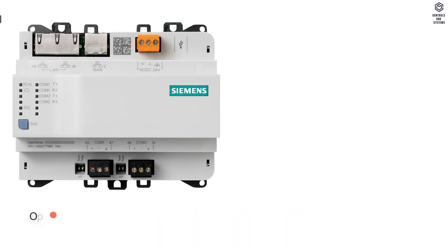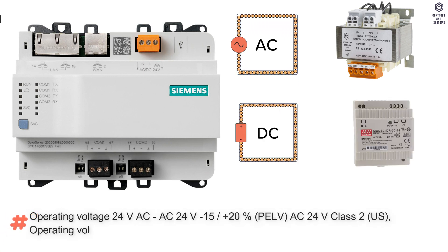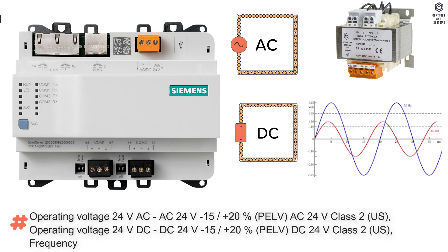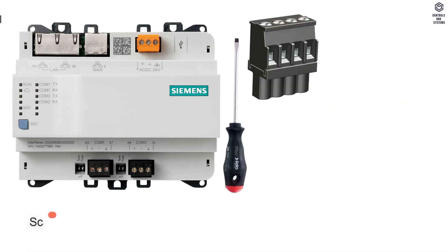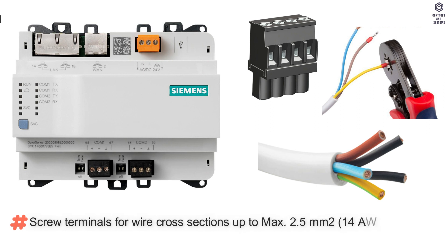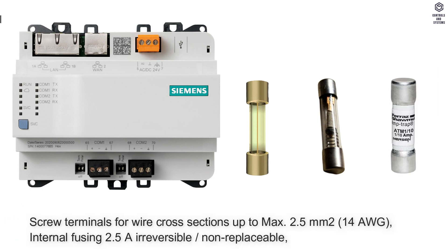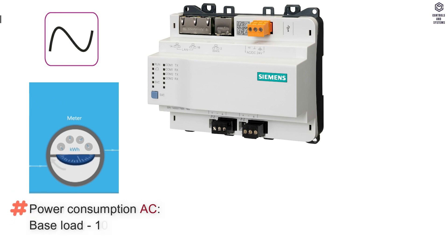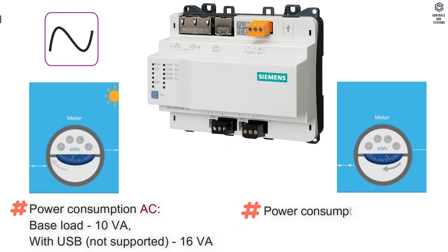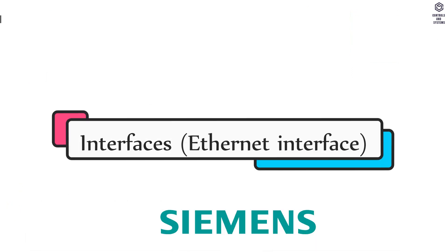Electrical data: operating voltage is AC 24V or DC 24V, minus 15 to plus 20 percent, PLV class 2, frequency is 48 to 63 Hz, screw terminals for wire cross sections up to maximum 2.5 square millimeters. Internal fusing is 2.5 amps, irreversible and non-replaceable. Power consumption in AC: base load is 10 VA, with USB is 16 VA. Power consumption in DC: base load is 5 W, with USB 8 W.